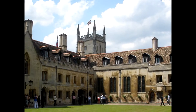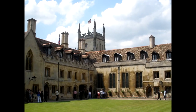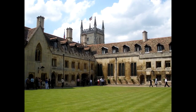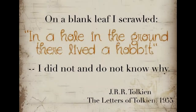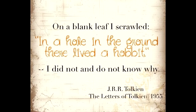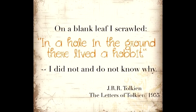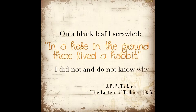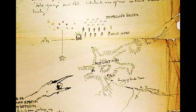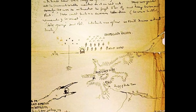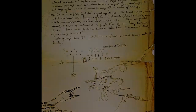While marking school certificate papers, Tolkien was struck by inspiration and, grabbing a blank sheet of paper, wrote, 'In a hole in the ground, there lived a hobbit.' These words would become the iconic first line of The Hobbit. By late 1932, Tolkien had completed the manuscript. He gave the manuscript to several of his friends.